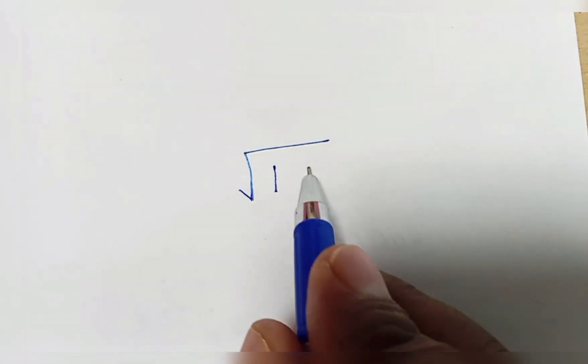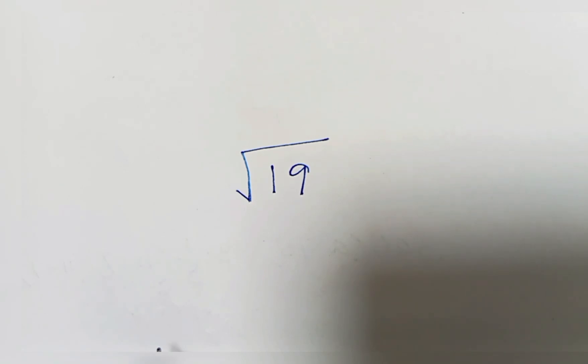Today's topic is how we can find imperfect roots. For example, if you want to find the root of 19.